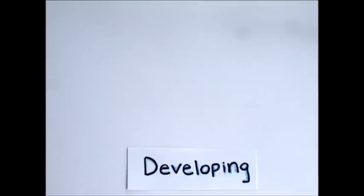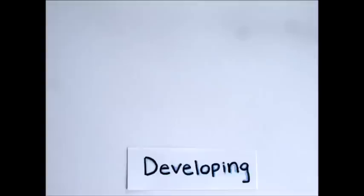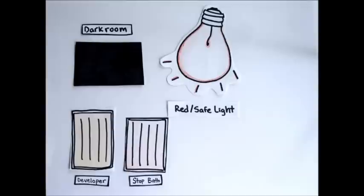This is the starting point for the conversion of the whole crystals to silver during development. In processing film, you need a dark room, red light, developer, stop bath, fixer, and water.